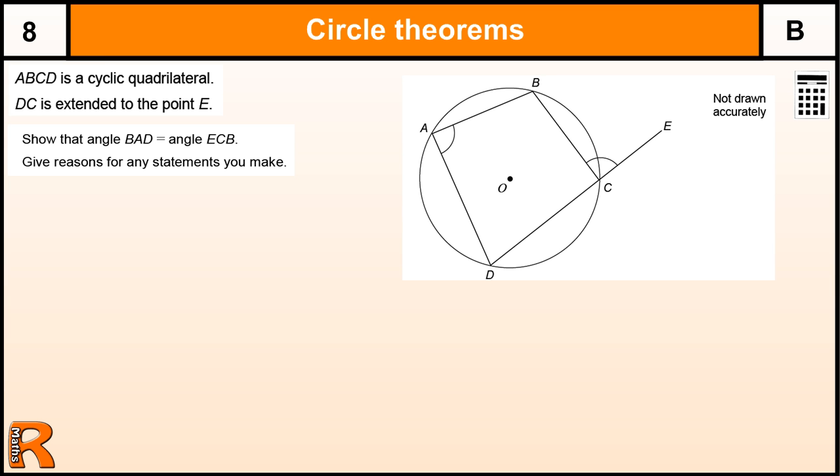Circle Theorems. This question is brought into two parts. I'm going to do the Grade B part first. This circle theorem that we're using here is the cyclic quadrilateral rule which tells us that opposite angles in the cyclic quadrilateral add up to 180 degrees.